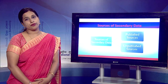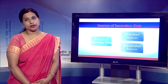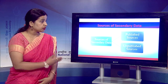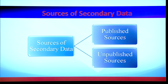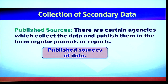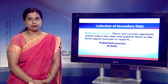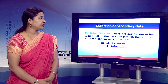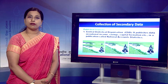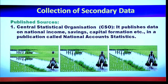Now we are going to discuss the sources of secondary data. There are two sources: published sources and unpublished sources. Published sources are certain agencies which collect data and present it in the form of journals or reports. Examples include the Central Statistical Organization, which publishes data on national income, saving, and capital formation in a publication called National Account Statistics.